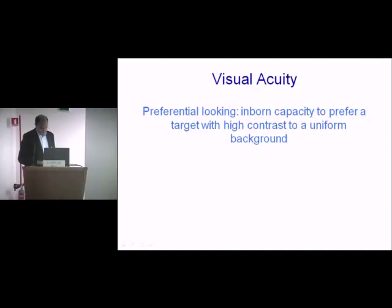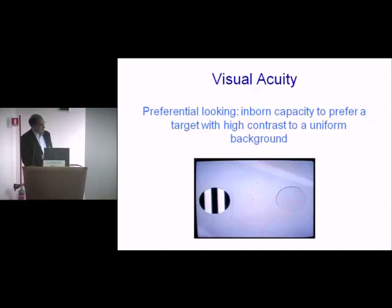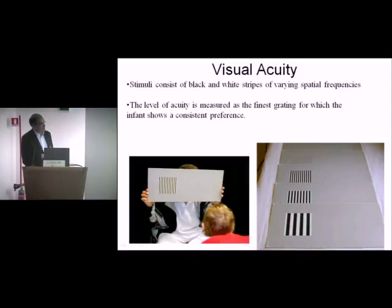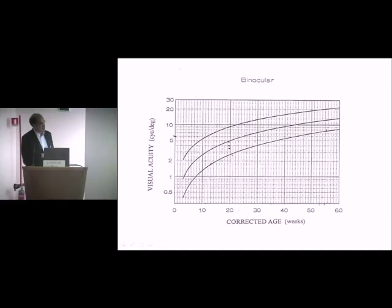For visual acuity, we exploit the inborn capacity to prefer a high-contrast target. We use stripes at different spatial frequencies, and the last level of stripes the child can consistently see is the measure of acuity. We have normative data, so you can see whether what the child is doing already in very few weeks of gestational age is appropriate for their age.